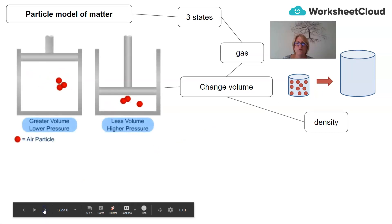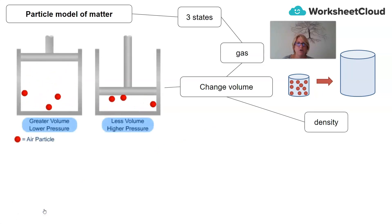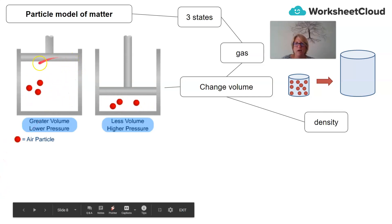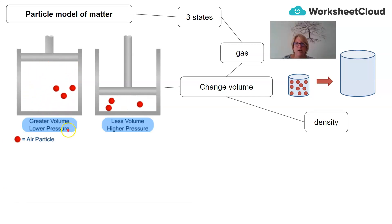So, it is also important to remember that when we look at changing volume, this is still linked up with density and mass, because the concepts of density, mass, and volume still link up with the particles in the particle model of matter. So, what happens if we take a gas and we change its volume? If we have a greater volume, we have a lower pressure. But if we change the volume of a container, we have a higher pressure.